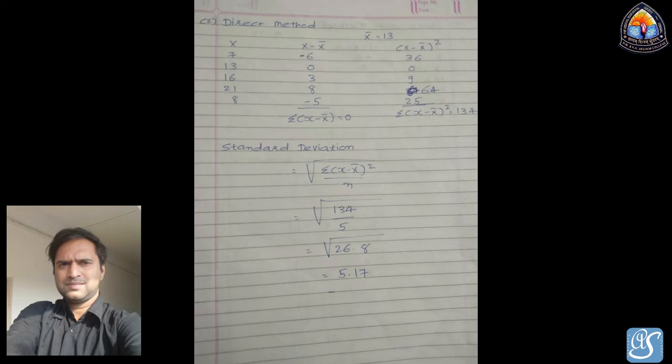Next, we find (x − x̄)²: (−6)² = 36, 0² = 0, 3² = 9, 8² = 64, (−5)² = 25. So Σ(x − x̄)² = 36 + 0 + 9 + 64 + 25 = 134. The standard deviation for the direct method is √(Σ(x − x̄)² / n) = √(134/5) = √26.8 = 5.17. The standard deviation of x is 5.17.